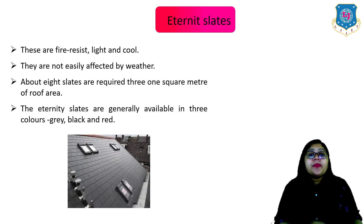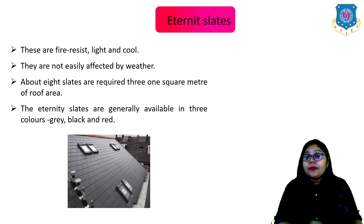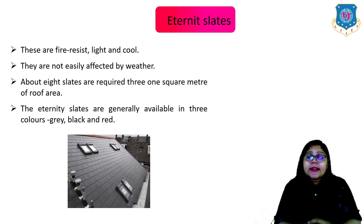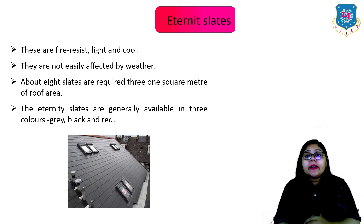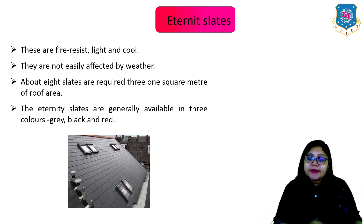Next is the eternity slates. These are fire resistant, light and cool as well. They are not easily affected by the weather, which is a plus point. About 8 slates are required per one square meter of roof area. Eternity slates are generally available in three colors: gray, black, and red.